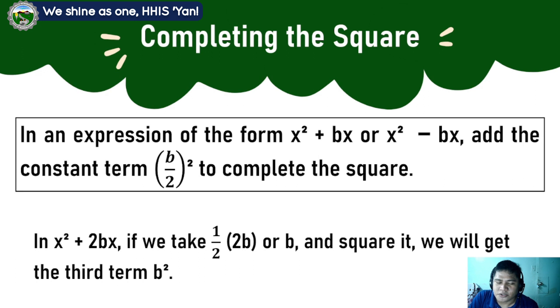So in x squared plus 2bx, if we take one half of 2b — which is b — and square it, we will get the third term, which is b squared.